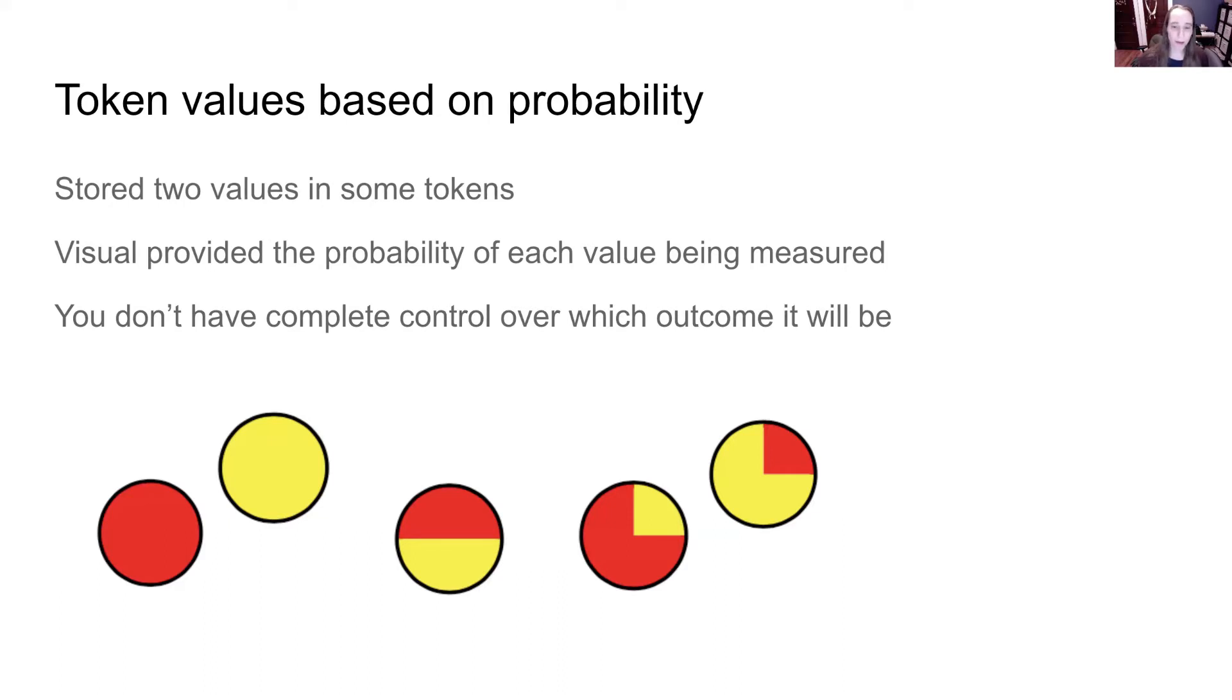However, we only had that probability. And so we still don't have complete control over the actual outcome, but we do have knowledge about the probability.